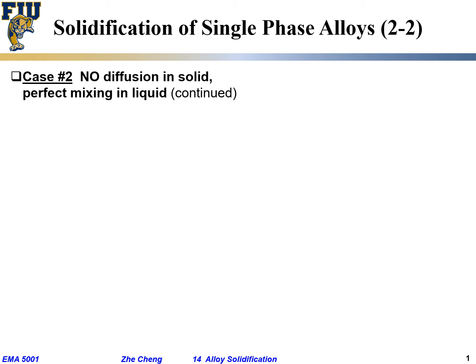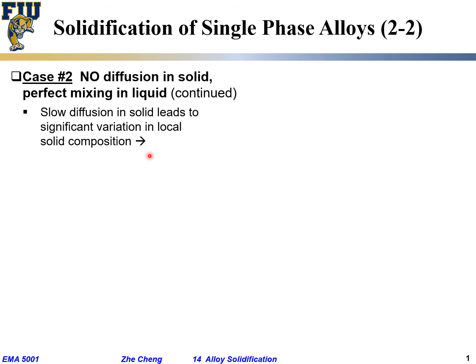Let's continue. The consequence of this is the solid composition. If you do solidification this way, the solid composition will not be uniform. Slow or no diffusion leads to significant variation — a change in local solid composition from one point to another.